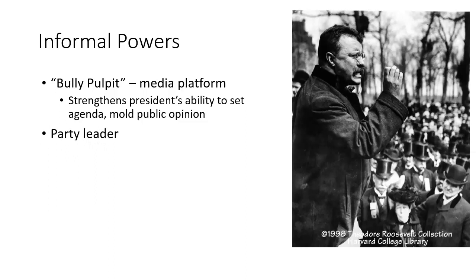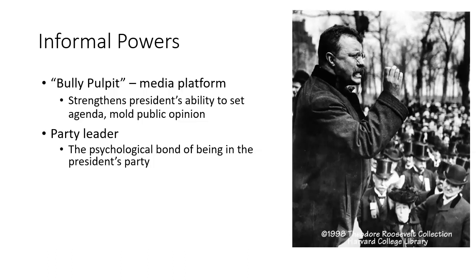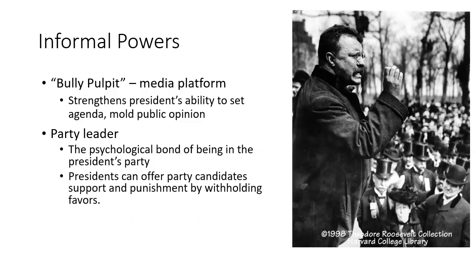A second critically informal power of the president is that of party leader. Shared party identification is perhaps the most important factor for overcoming obstacles to cooperation between the president and Congress created by the separation of powers. Members of Congress who share the president's party label have a built-in incentive to cooperate with the president and help him succeed, since members of the same party tend to sink or swim together at the next election. Presidents can also use their position atop a political party to provide favors for supportive party members, and sometimes punishment for party members who fail to go along with the president.